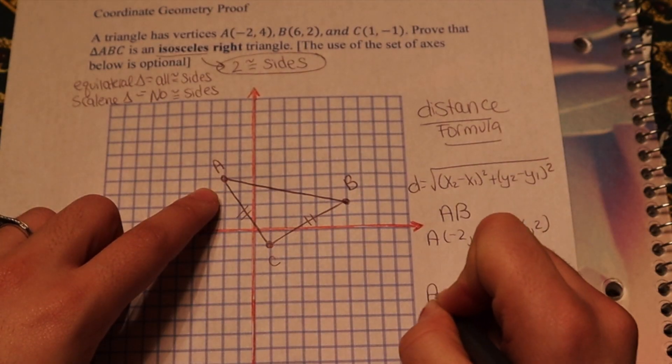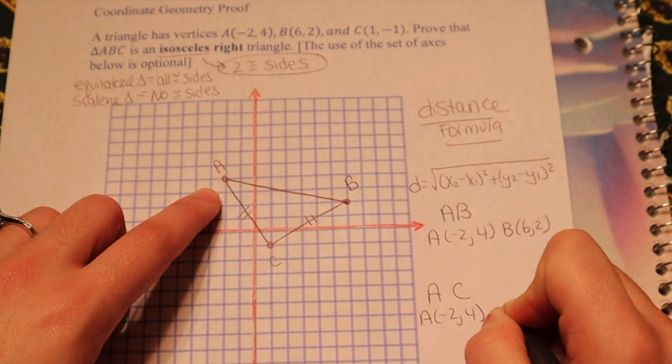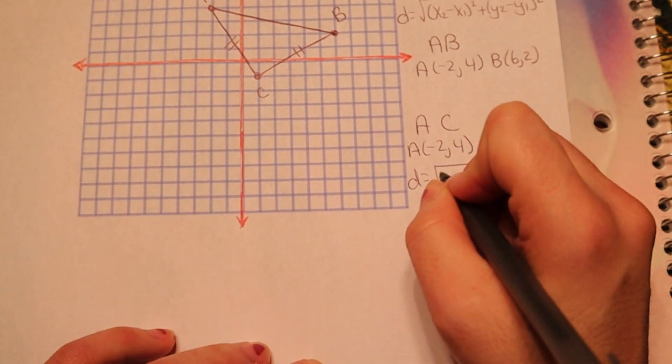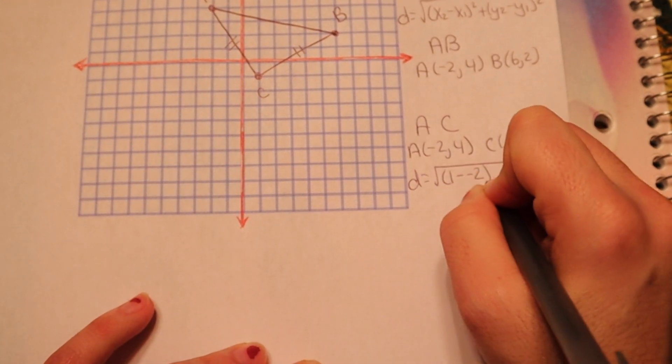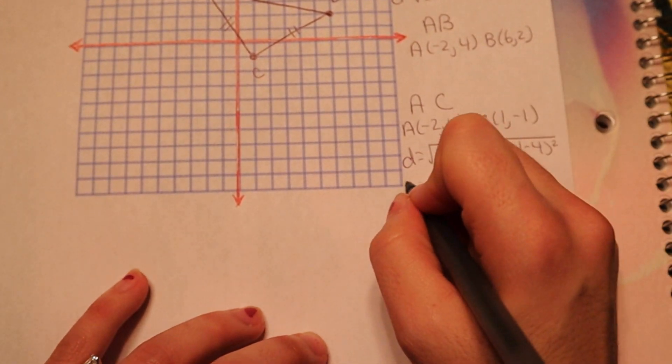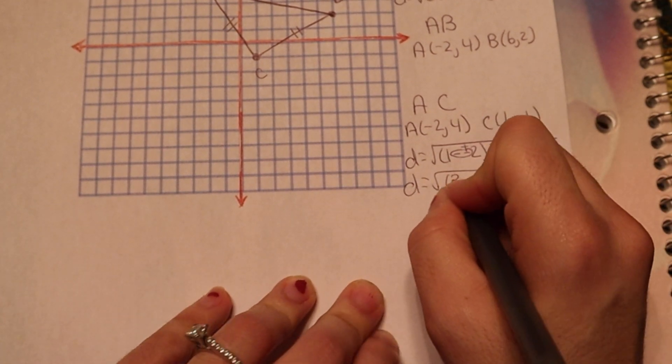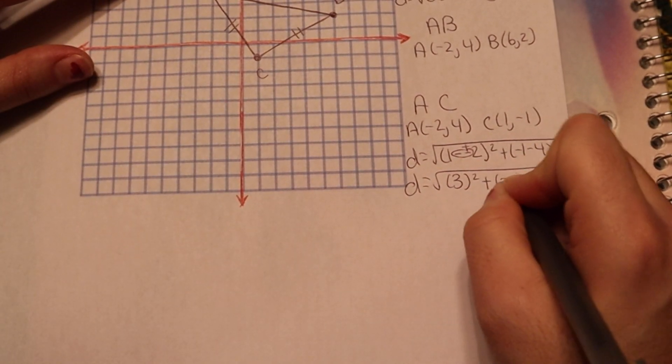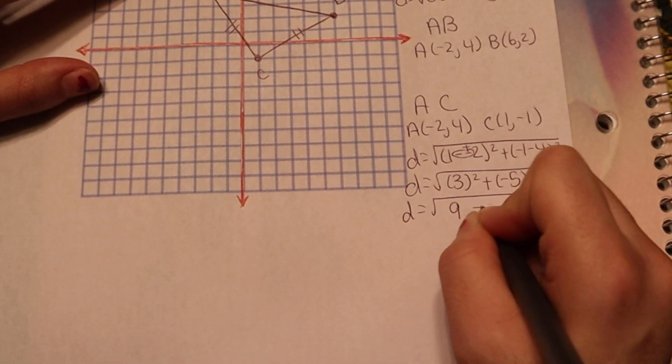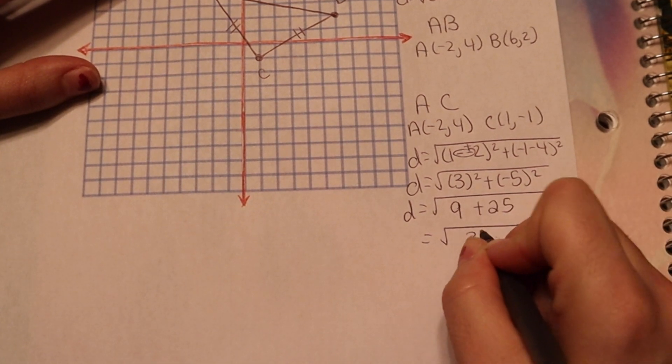So let's say I were to do AC first. A is negative 2, 4. C is 1, negative 1. So it's going to be 1 minus negative 2 squared plus negative 1 minus 4 squared. Double negative becomes a plus. So this is going to be 3 squared plus negative 5 squared, which will be 9 plus 25, which will be the square root of 34.